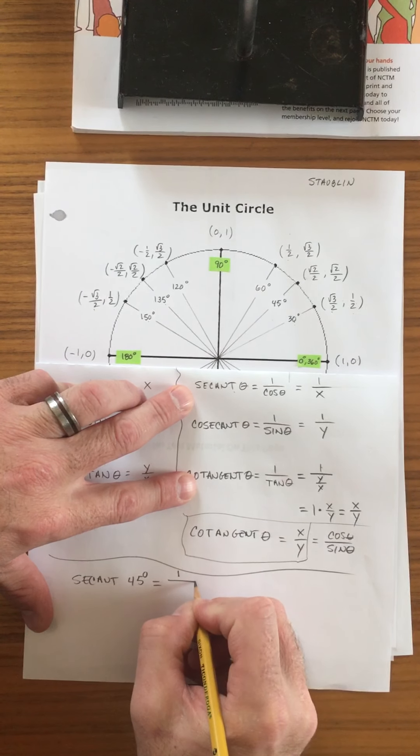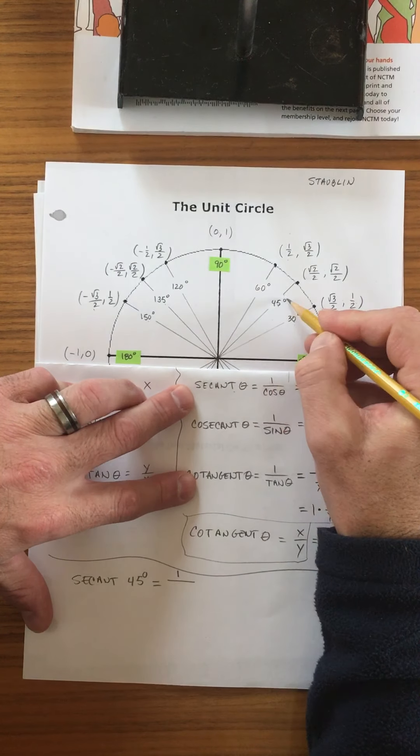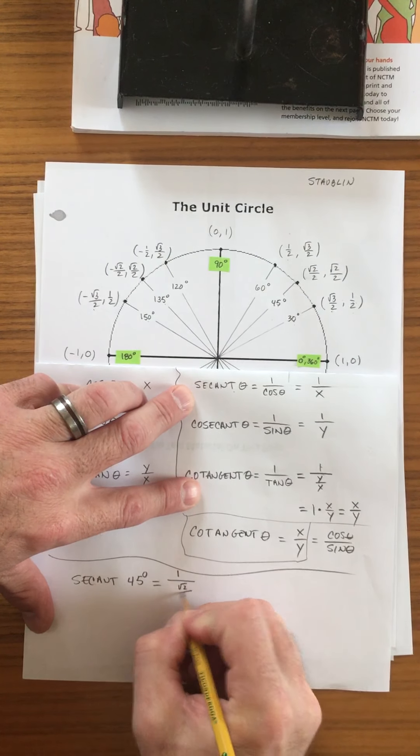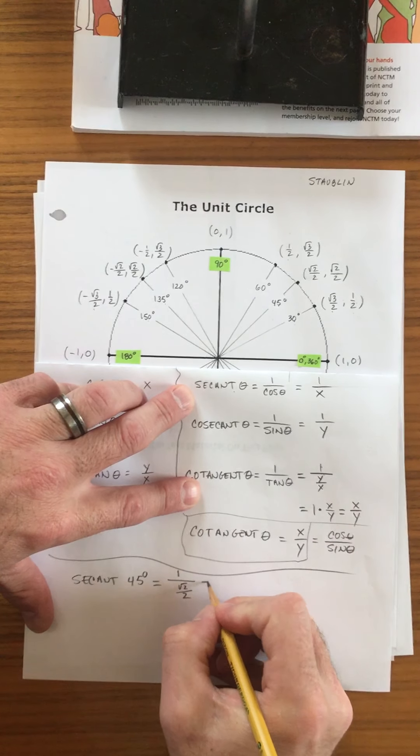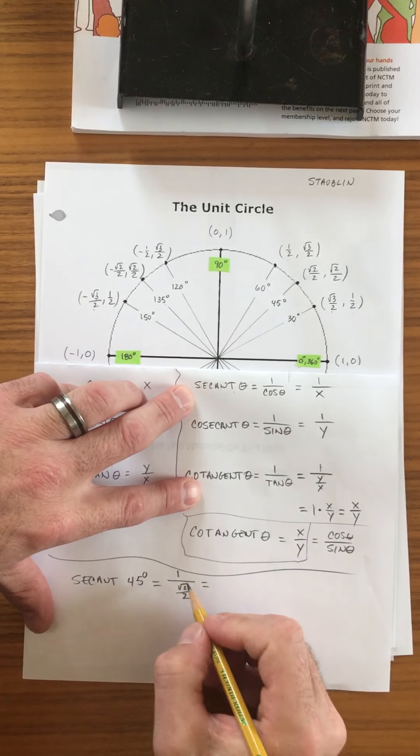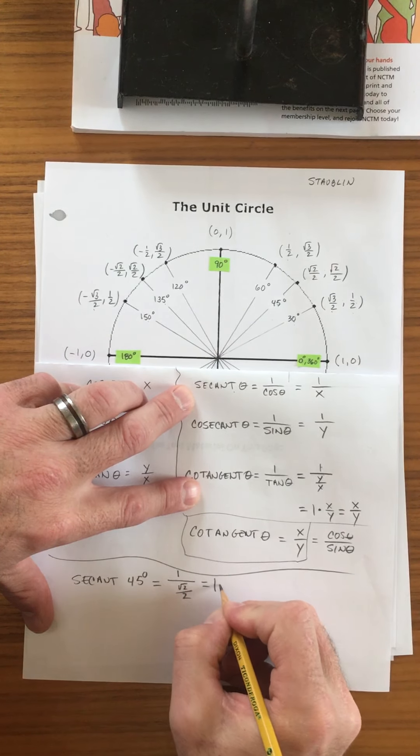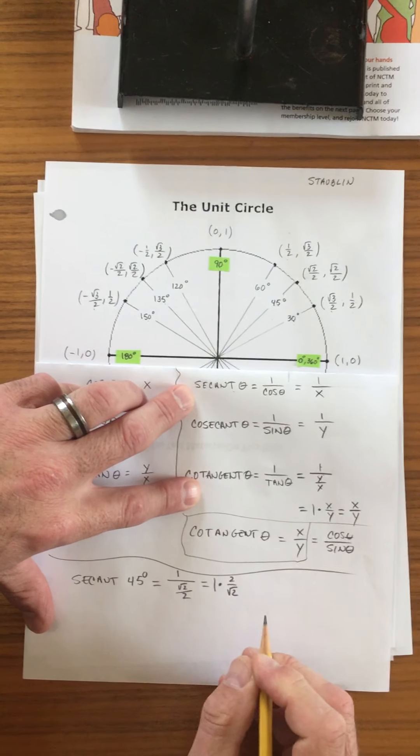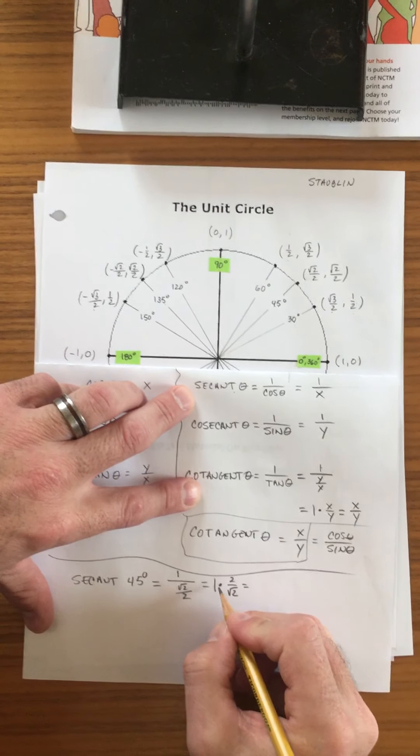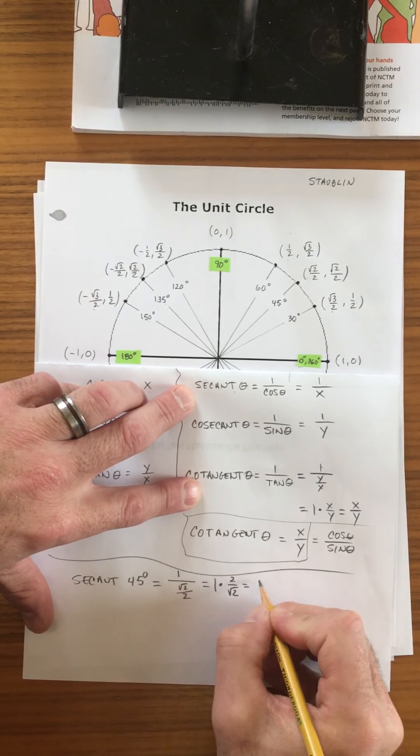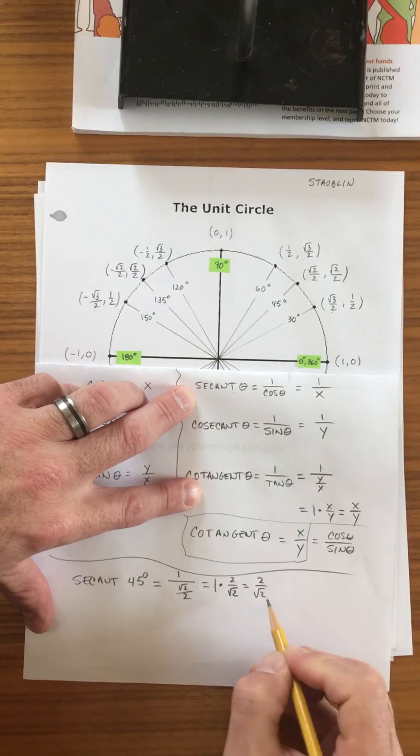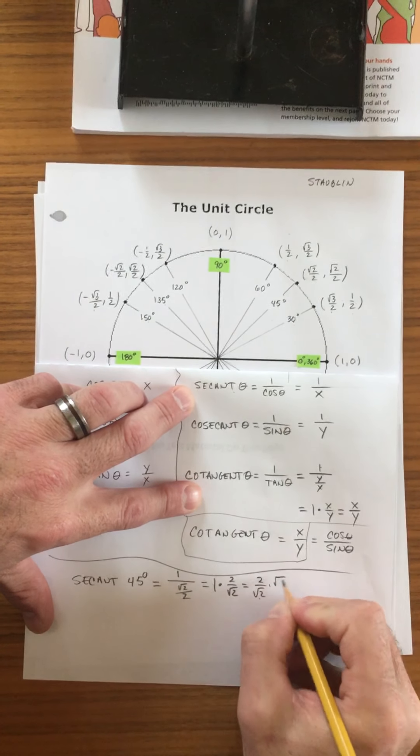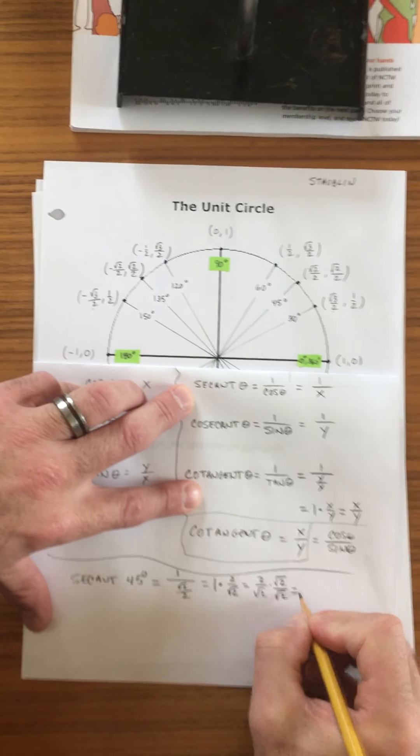So this would be 1 over, and we would go to 45, and we'd find the x value, which is square root of 2 over 2. And so now we got some work to do. This is going to be 1 times the reciprocal. And obviously, if you multiply 1 times something, it's just that. And now we have to get rid of the square root in the denominator. So you have to multiply like that.